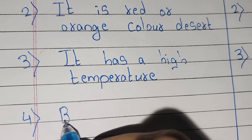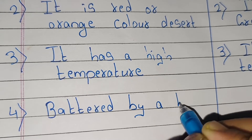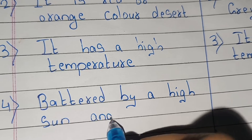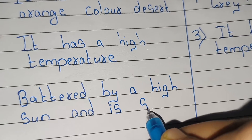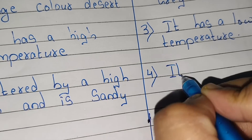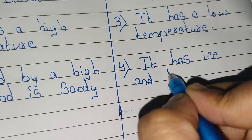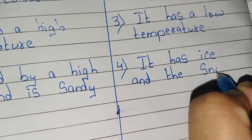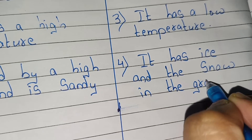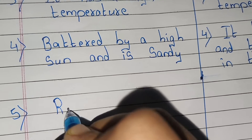Fourth point: in hot desert, it is battered by a high sun and is sandy. And in cold desert, it has ice and snow on the ground.